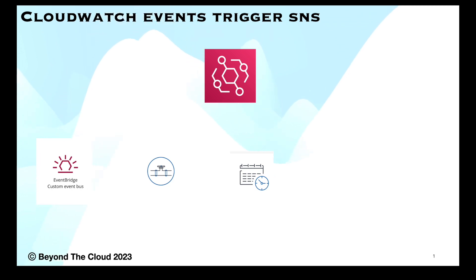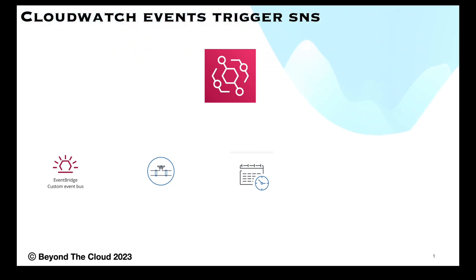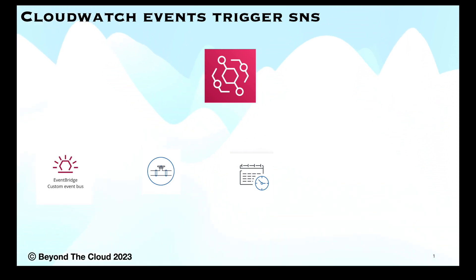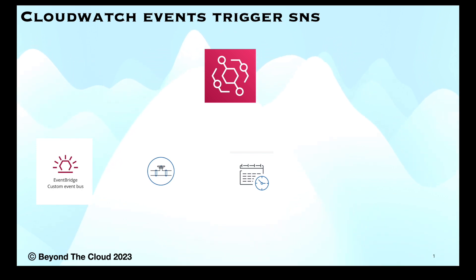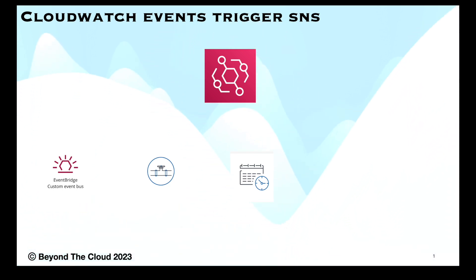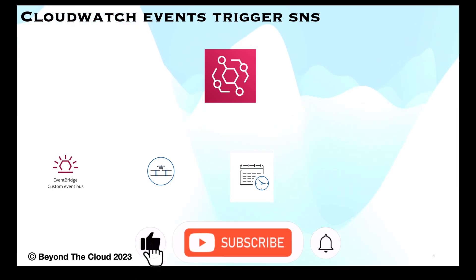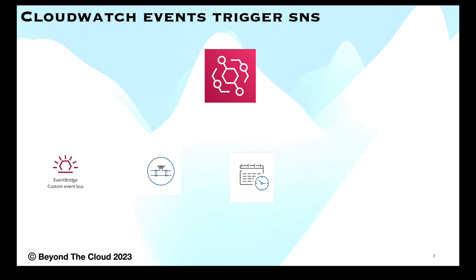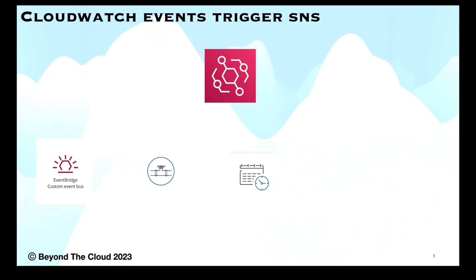The next component is the Scheduler. EventBridge Scheduler is a serverless scheduler that allows you to create, run, and manage tasks from one central managed service. It is highly scalable and allows you to schedule millions of tasks, invoking any AWS service as a target. It supports templated targets for common API operations, over 270 AWS services and 6000+ API operations, flexible time windows, and automatic retry — ensuring at least one delivery succeeds with a response from the target.